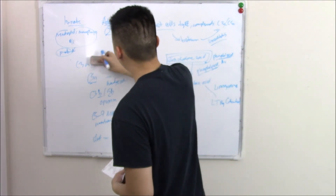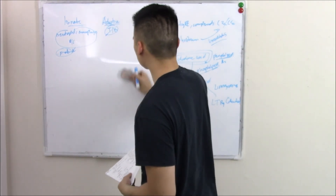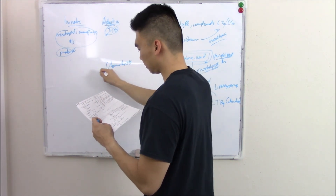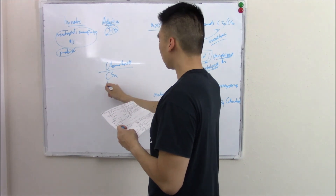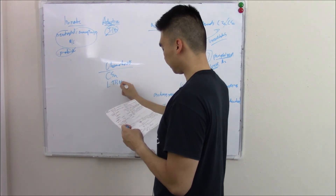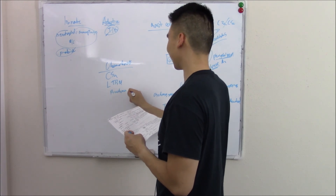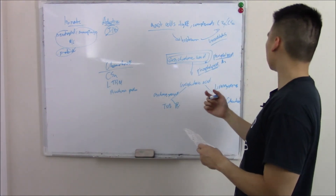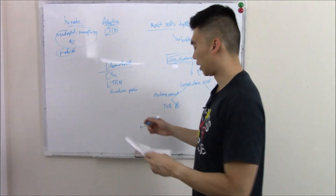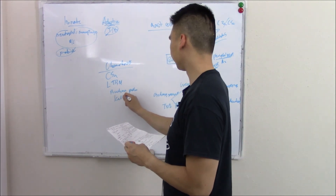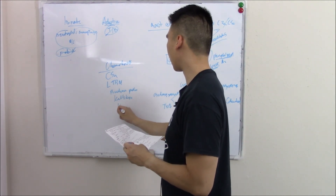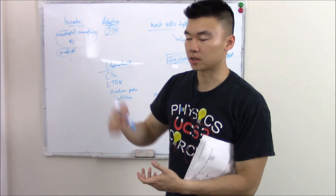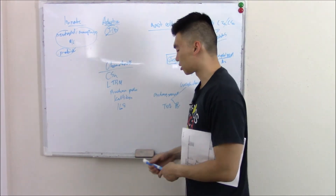Let's quickly summarize all the chemotactic agents you need to know. C5A was one. We just talked about LTB4 — leukotriene B4. Bacterial products also make sense as chemotactic signals. Bradykinin is an inflammatory mediator produced by kallikrein. And finally, IL-8, which is secreted by cells and pulls in other cells. These all work together to recruit immune cells to the site of infection.